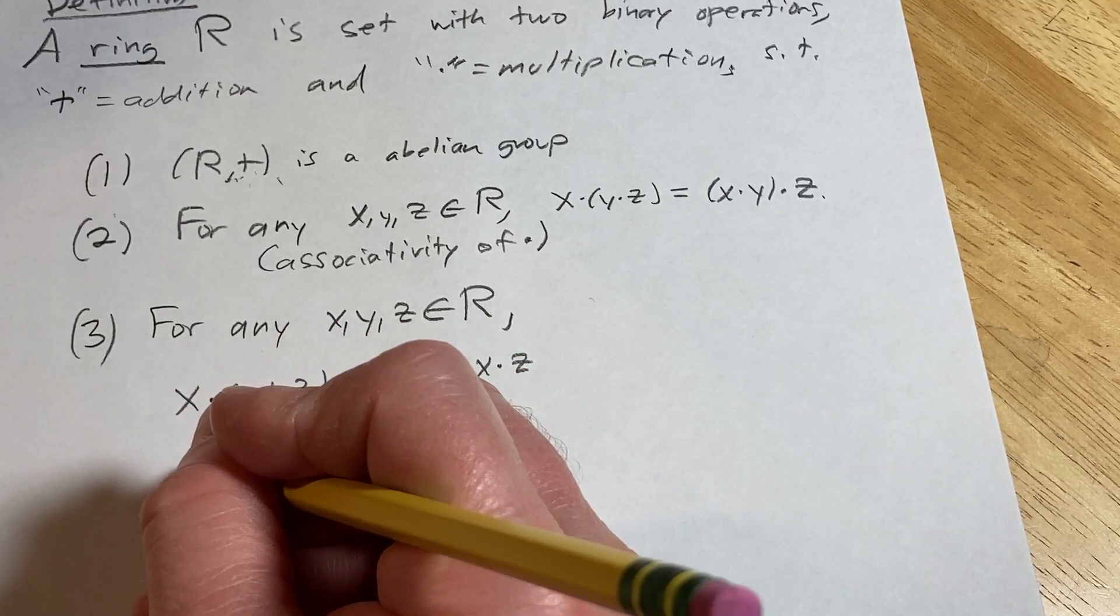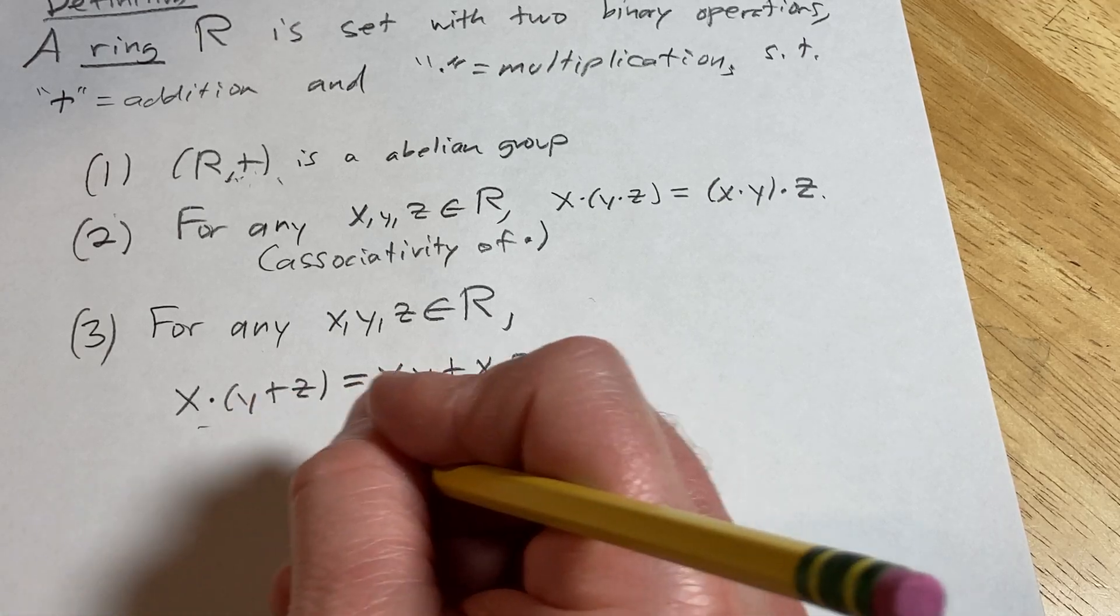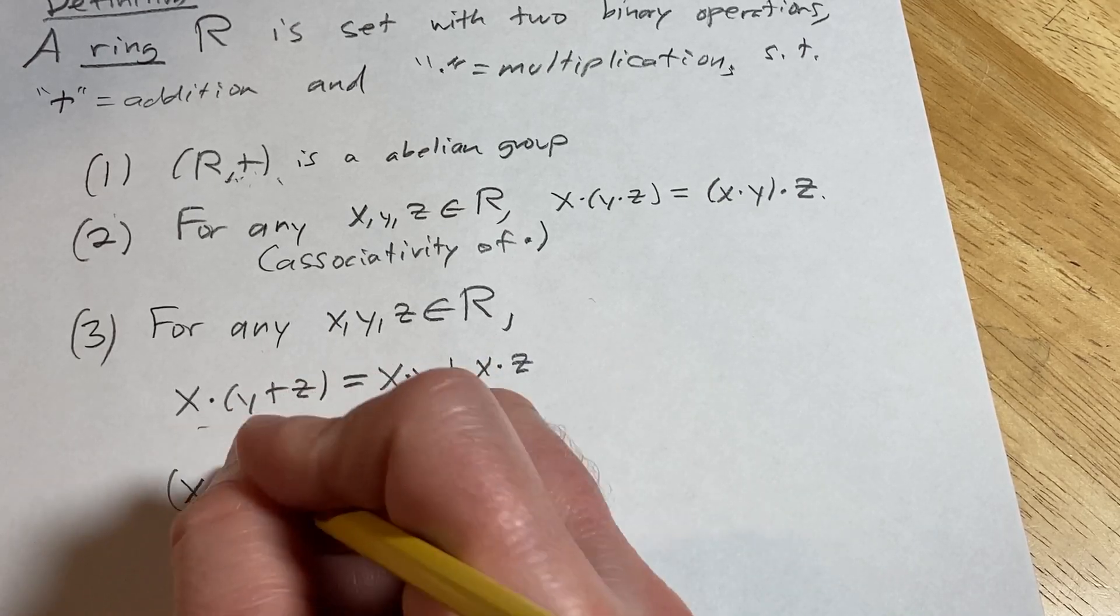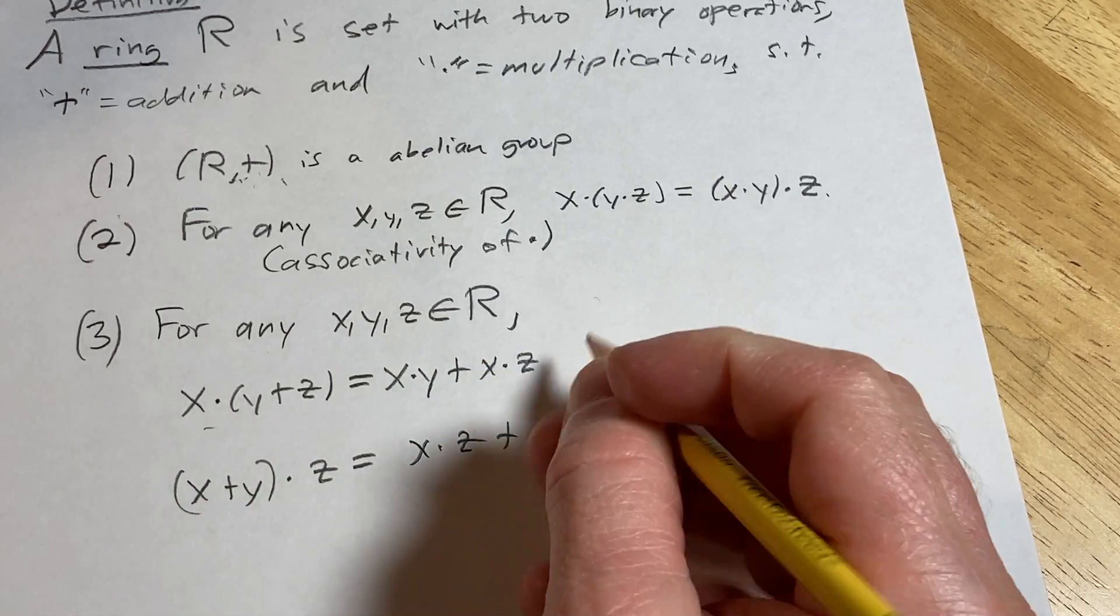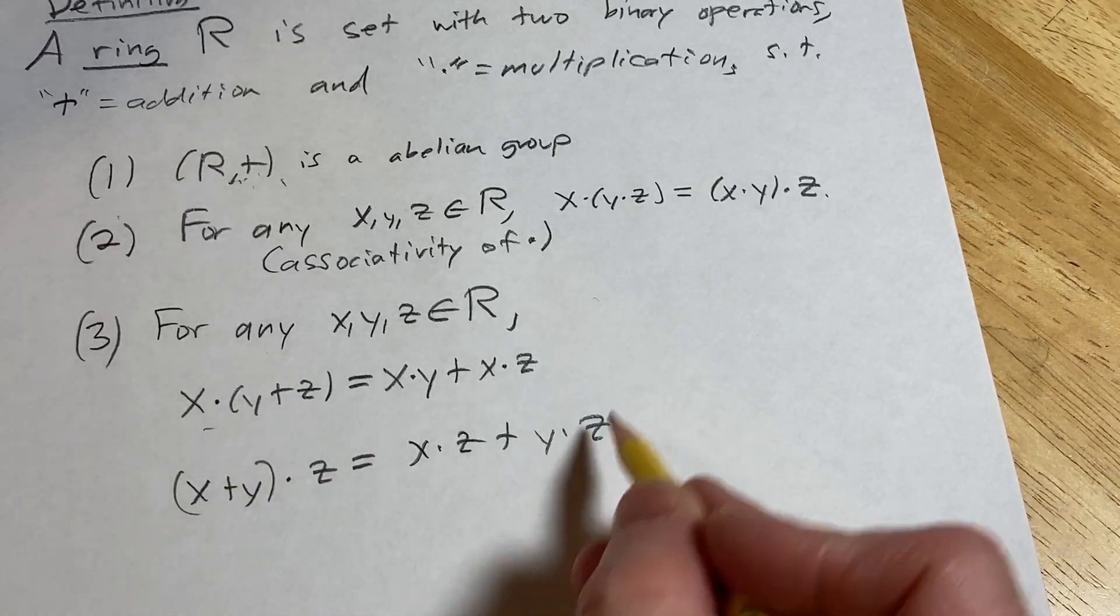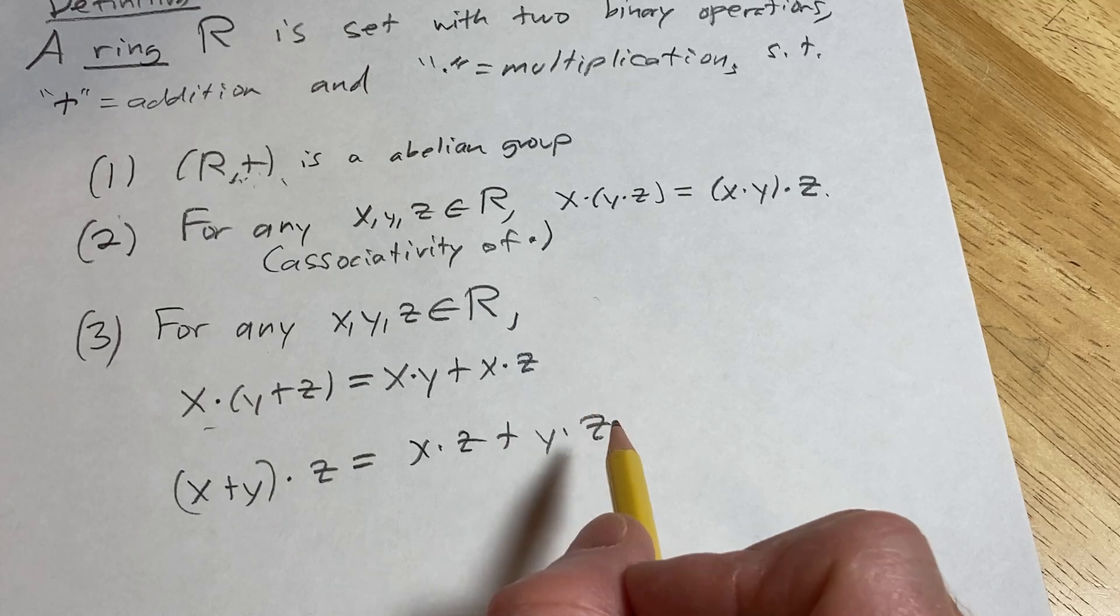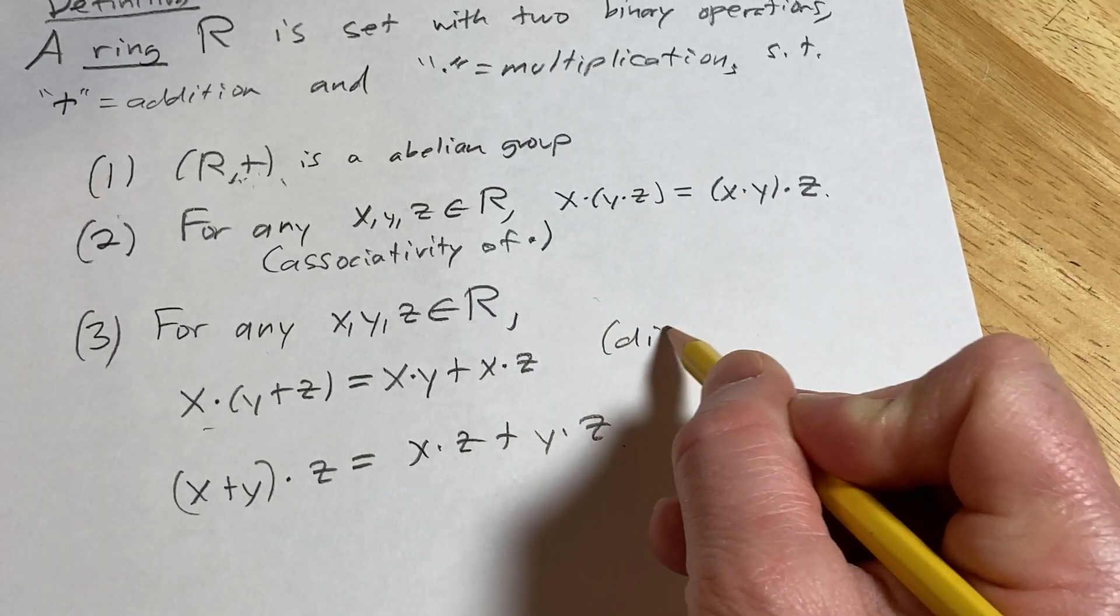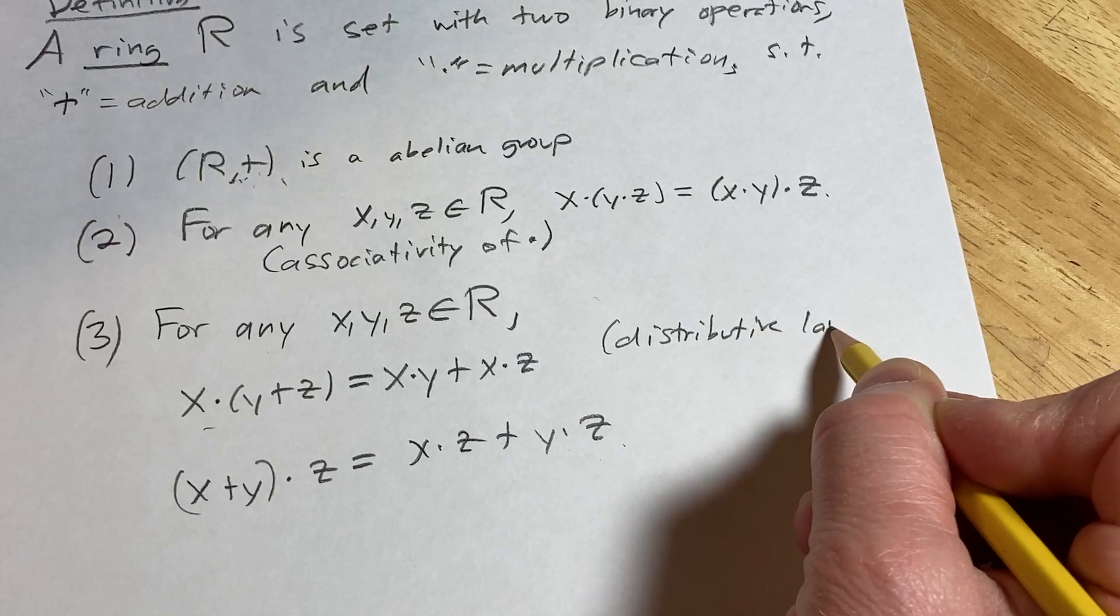And likewise, you can do it on the right. So (X plus Y) times Z is equal to X times Z plus Y times Z. A little bit more natural to do it that way. And that has to be true. So left distributivity and right distributivity. This is the distributive law. Very important that this holds.